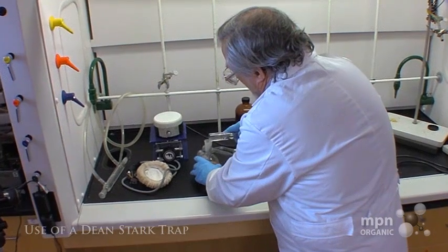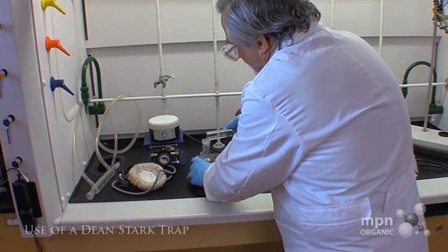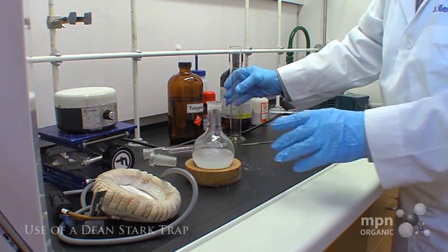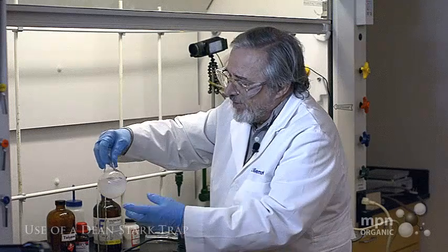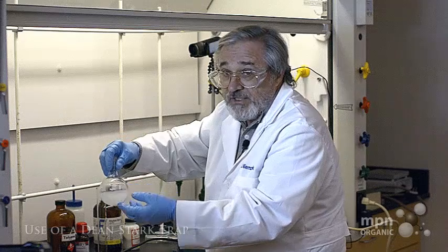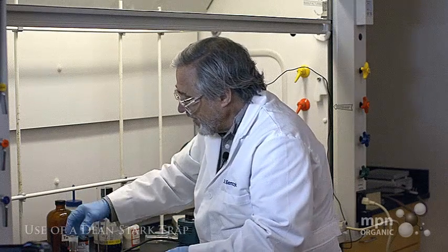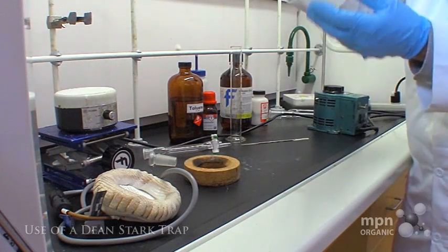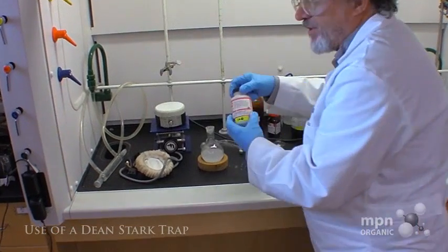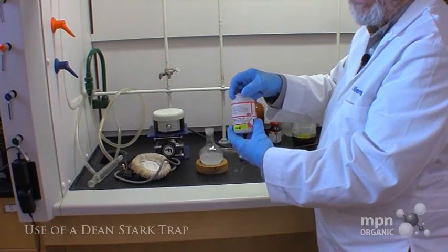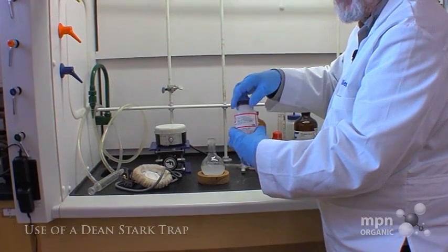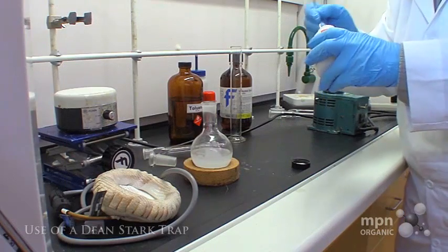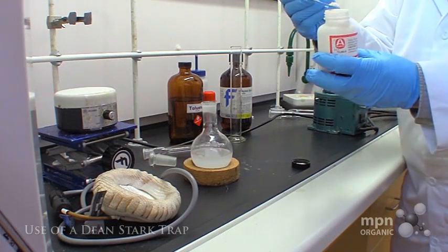We'll just add the toluene in there. I've got my toluene in there, and once again the ethylene glycol is not going to be soluble in the toluene. I'm going to carefully put my stirring bar in there, and then I'm going to add the catalyst, the p-toluenesulfonic acid. The reaction will not go without the p-toluenesulfonic acid. I'm going to add a few milligrams—that's about it.